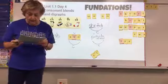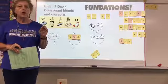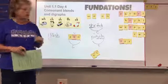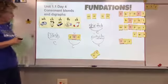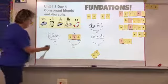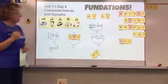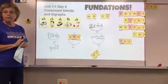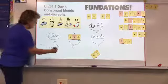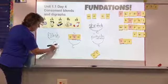We have one last word to do. Echo me: golf. My dad likes to golf on Saturdays. Elbows up. Golf. G-O-L-F. Spell it. Show me your boards. Is that what you got? Now, do you see a digraph? Thumbs up or thumbs down? No, no digraph. But there is a blend, so we're going to mark the blends. Short vowel O, and it is a closed syllable.